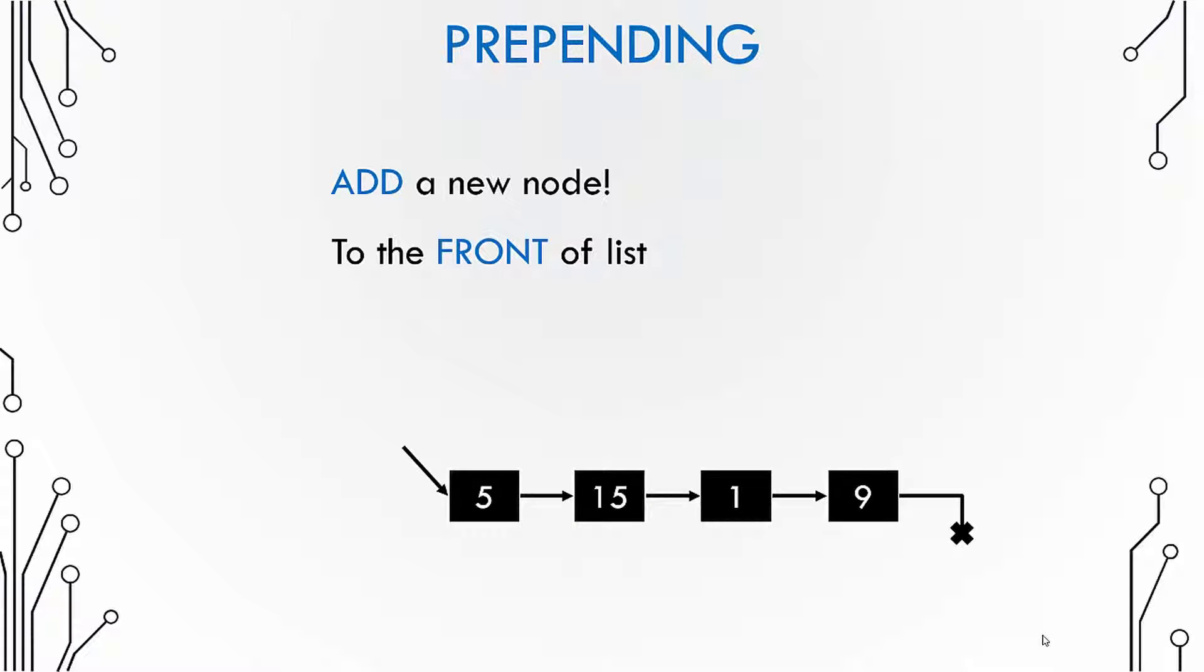And it's quite simple. You have to first create a node, point it to the first node, and then move the head pointer to point to the newly created node which is now the first node.